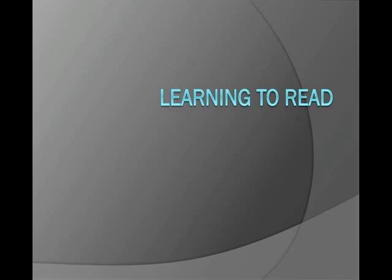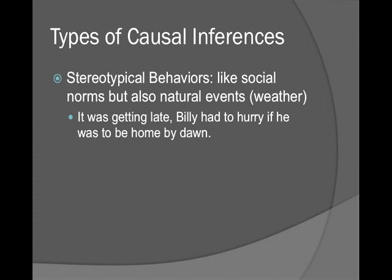All of those things together are the ways we inference. Inferencing is used to create a situational model — a mental picture. That's more discourse processing. The dual root model explains physical word reading. Now let's talk about how people learn to read.